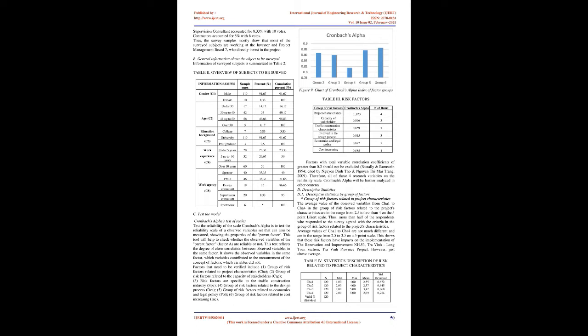Materials, labor, and machine cost increases: This group of factors occurs often; most of the projects are affected by the group of price slippage factors due to the increase of the material price index causing the increase in construction costs. The project to renovate and upgrade NH.53, Tra Vinh A Long Tone Section, Tra Vinh Province, with a total length of 43,800 kilometers, was invested and built in the areas of Chowton, Kaengang, and Duyuan High Districts, Tra Vinh Province. The project road is designed according to the three-level road design standard.